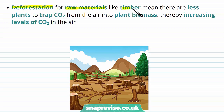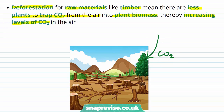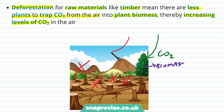Deforestation for raw materials like timber means there are fewer plants to trap CO2 from the air into the plant's biomass, so this is also increasing the levels of CO2 in the air. Normally the trees would take CO2 in and store this as their biomass through photosynthesis, but if we are removing the trees for wood, then the CO2 is not being absorbed and the levels of it rise in the air.